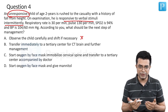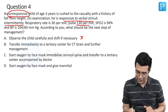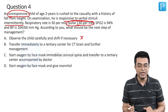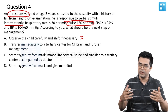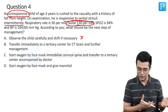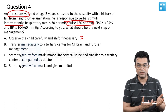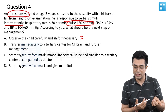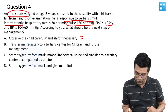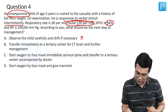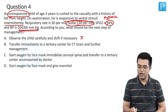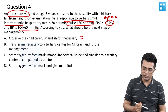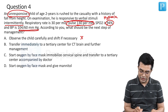Respiratory rate of 30 per minute can be considered tachypneic. Pulse of 130 per minute can be due to pain, underlying bleeding, or a normal sympathetic response to trauma. Importantly, there is no bradycardia. Saturation is 94%, so hypoxia is present in the child. BP is 104 by 60 — no significant hypertension.